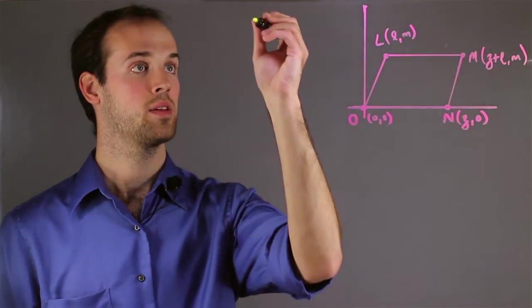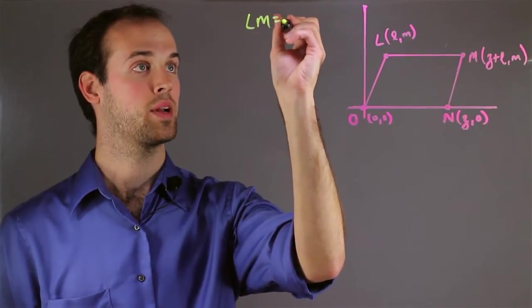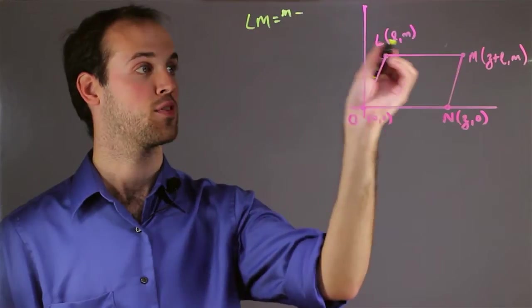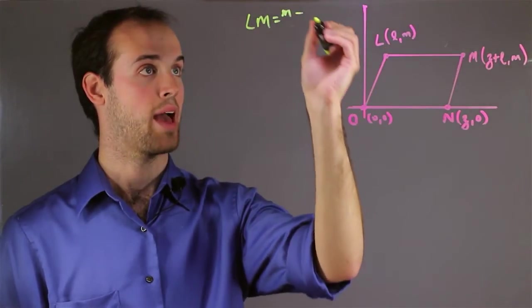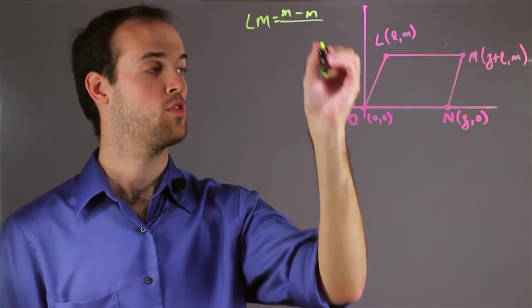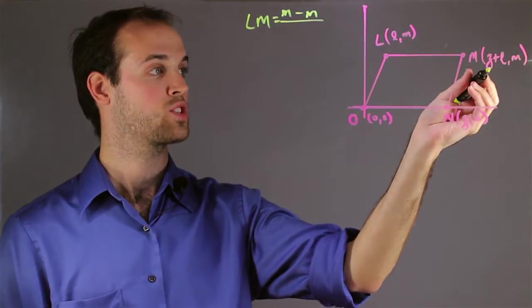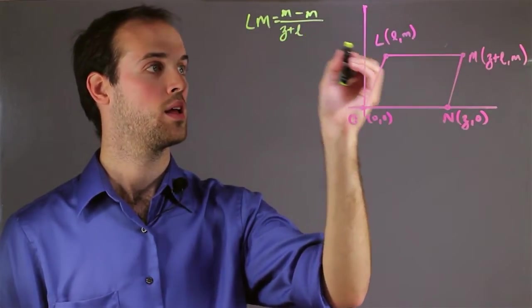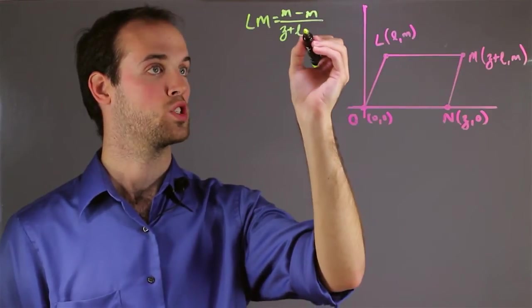So let's start with LM, and I want to take the second y-coordinate, which is M, minus the first y-coordinate, which is M, over the second x-coordinate, which is Z plus L, and the first x-coordinate, which is L.